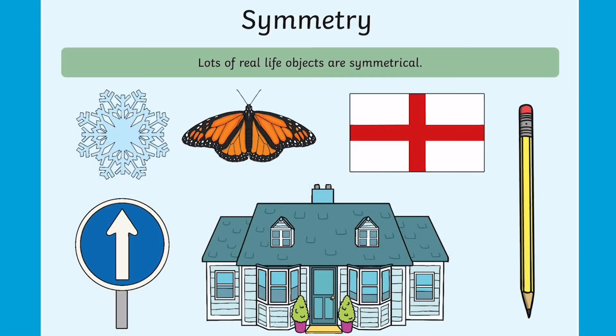In the third and final lesson we will learn how to add vertical lines of symmetry to 2D shapes. Lots of real life objects are symmetrical too. Just take a little moment to look round the room and see if you can find anything that is symmetrical.